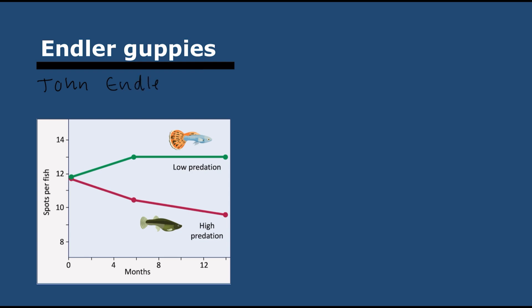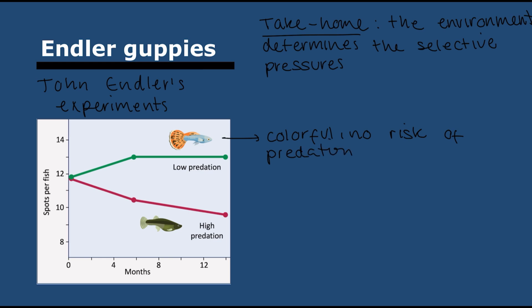Now we have Endler's guppies. John Endler put guppies in two containers. In one there were no predators, in another there were predators. With no predators, the guppies developed striking colors because it gave them an advantage when mating. With predators, they became duller because colors made them more visible. This shows that the environment determines the selective pressures.